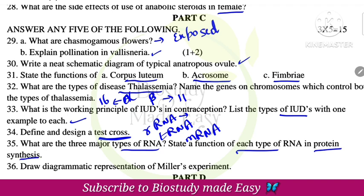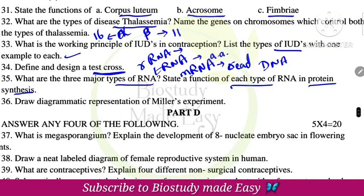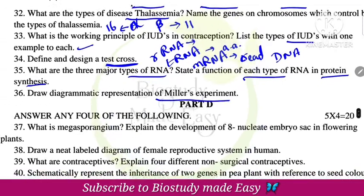rRNA helps in ribosome synthesis and protein synthesis. mRNA reads the code on DNA. tRNA transfers amino acids. Draw a diagrammatic representation of Miller's experiment.